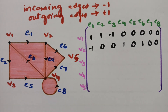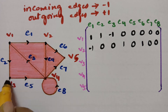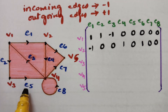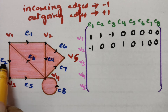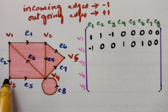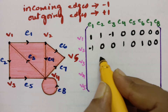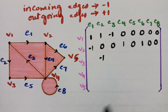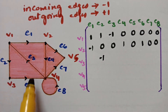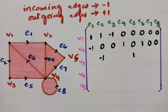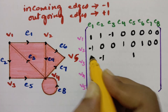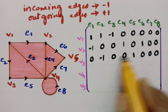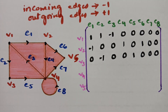Coming to v3, it has only two edges: e2 and e5. e2 is an incoming edge, so minus 1. e5 is outgoing, so plus 1. Remaining are all zeros — six zeros plus these two give the total 8 edges.